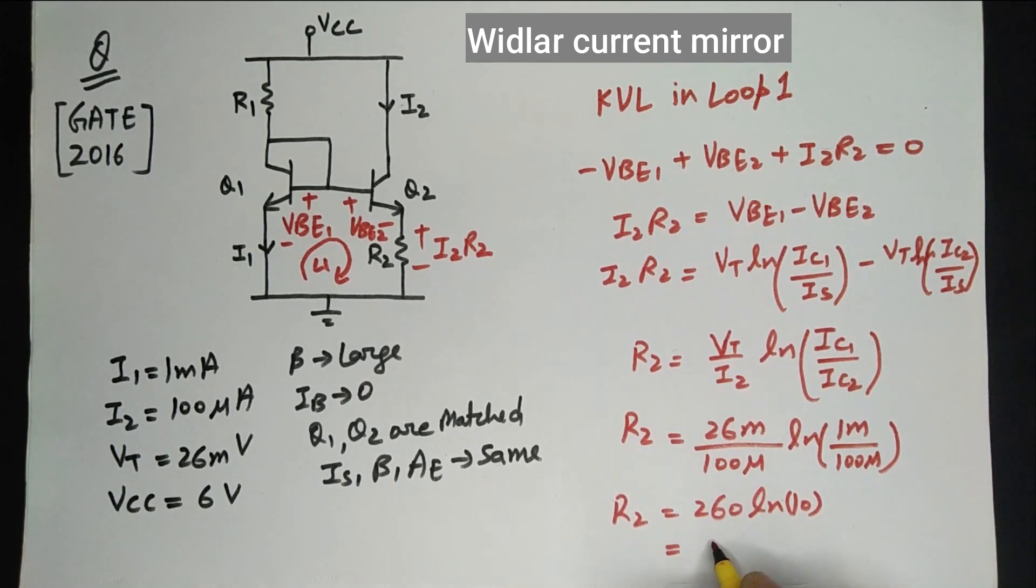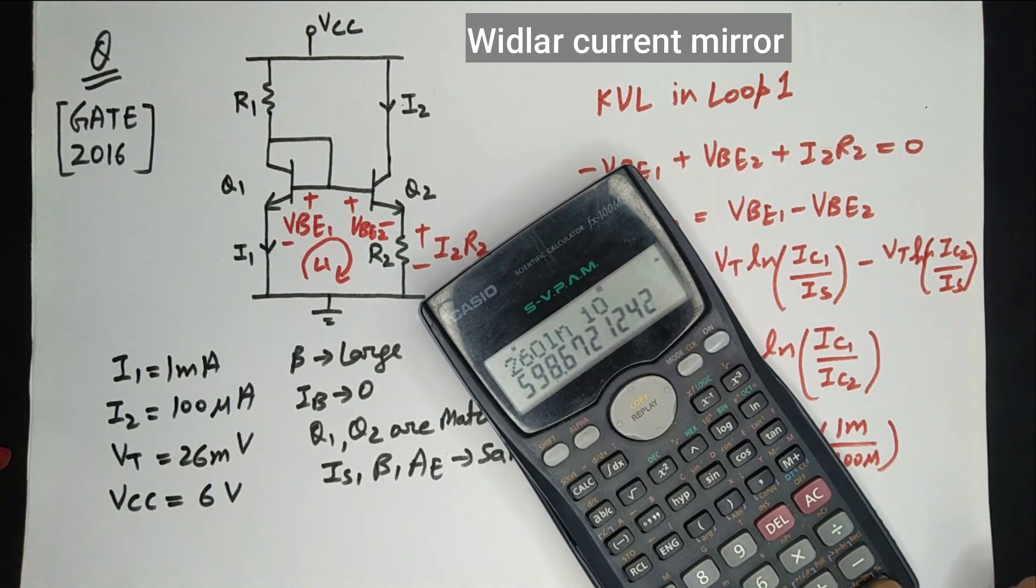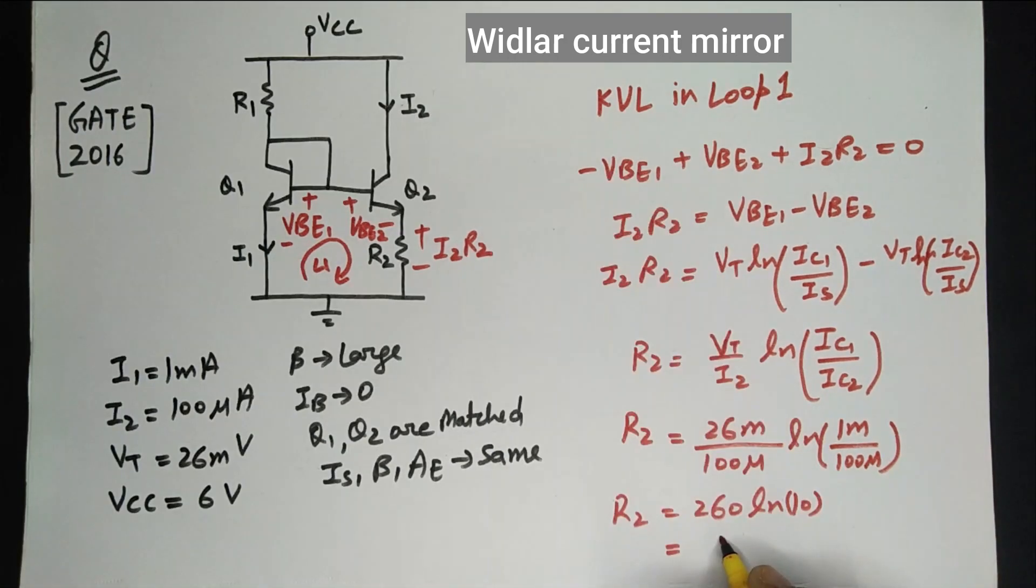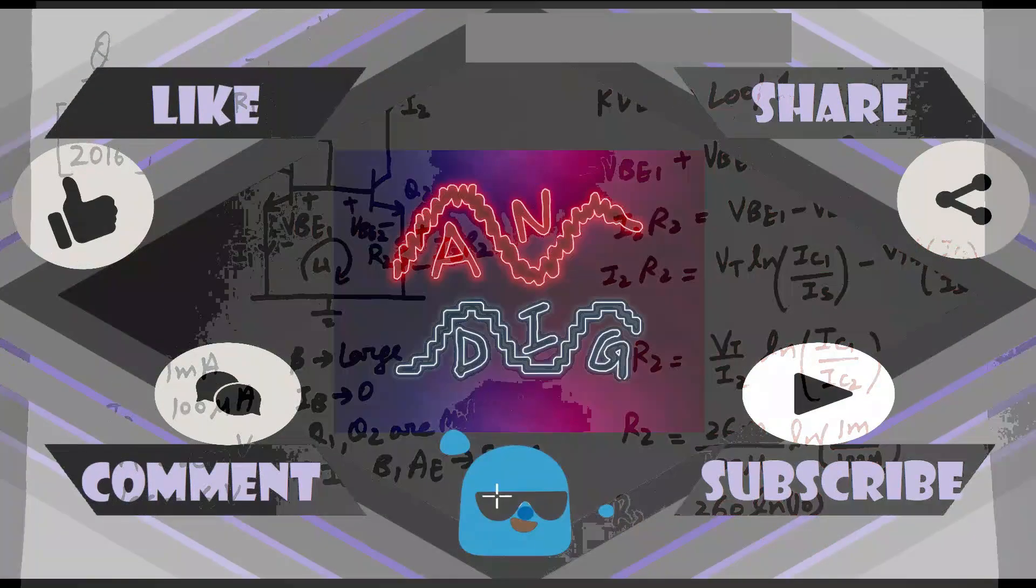When we solve this value using calculator, we will get 590.67 ohms. This is the value of R2.